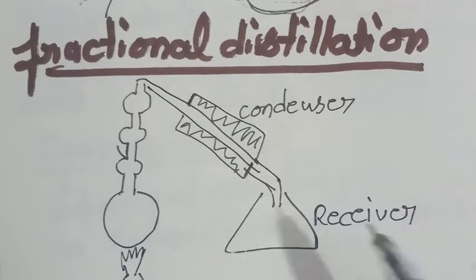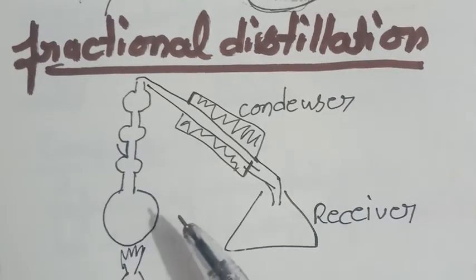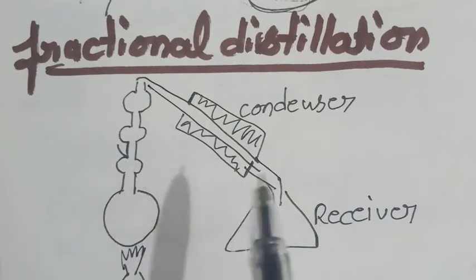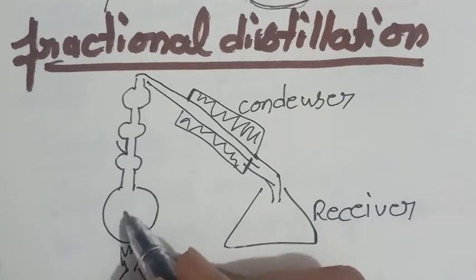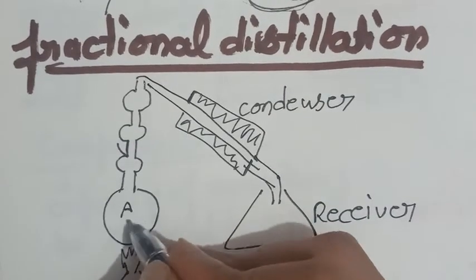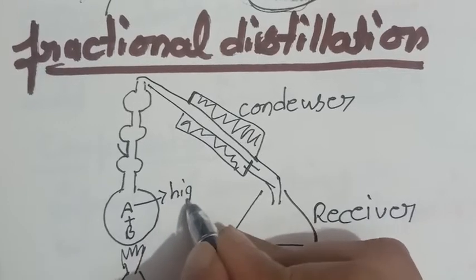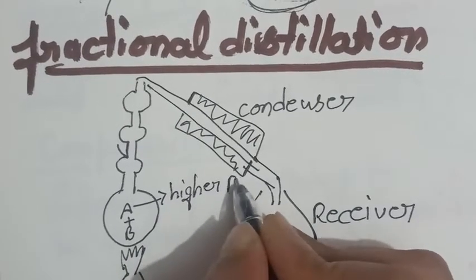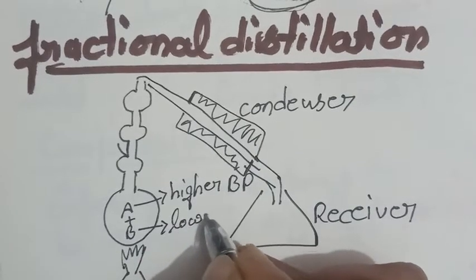So, ultimately student, the fractional distillation takes place in the mixture where both the substances are in liquid form. Matlab, dono hi evaporation show kareenge, but their boiling point is different. For example, here we are having two liquids, A plus B. It is having higher boiling point, whereas this one is having lower boiling point.